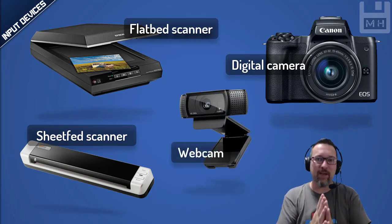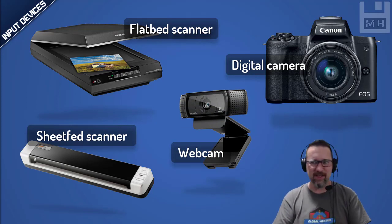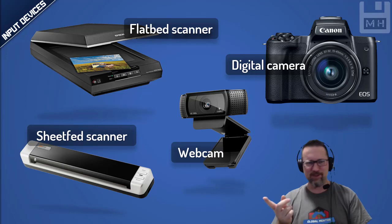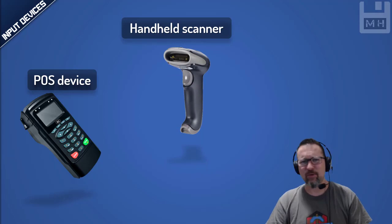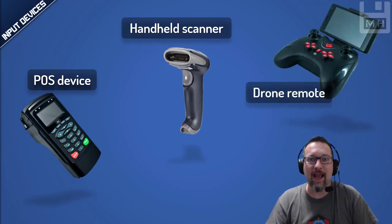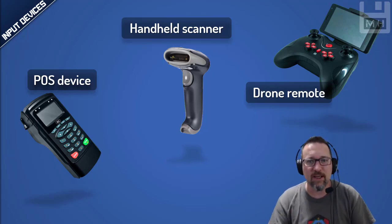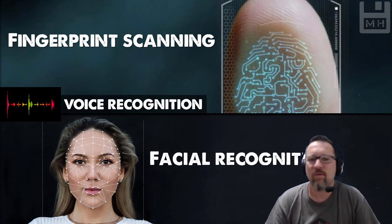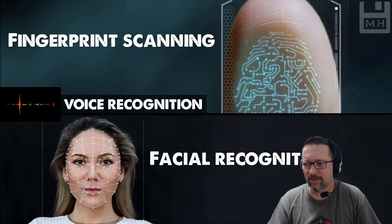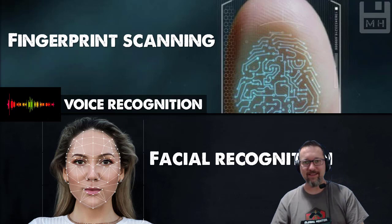A webcam is another input device, pretty much like the one being used right now. More input devices include a POS — point of sale — device. If you're in grade 11 and don't know what POS stands for, you're in trouble. We also have handheld scanners, which we'll discuss shortly, and a drone remote control, which is another form of input.